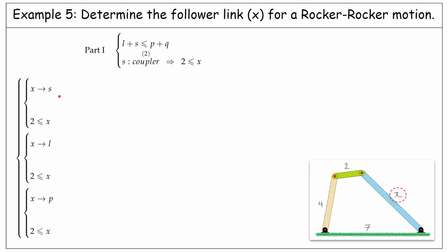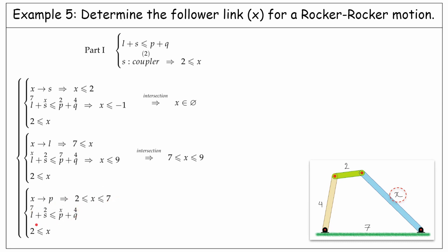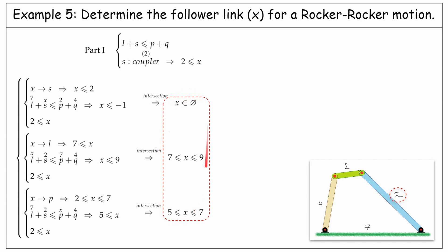Assuming X as the shortest means it should be less than or equal to 2. From the Grashof's condition after substituting the lengths, we have X should be less than minus 1. Considering all three requirements in this case, their intersection is empty. Next, assuming X as the longest means it should be longer than or equal to 7. From the Grashof's condition, X must be less than or equal to 9. The intersection of the requirements becomes X between 7 and 9. Lastly, assuming X as P, it should be between 2 and 7. From the Grashof's condition, X must be bigger than 5. The intersection in this case becomes X between 5 and 7. Finally, the union of the results for all three assumptions becomes X between 5 and 9. This is the range for the follower link to provide a rocker-rocker motion from the first part.